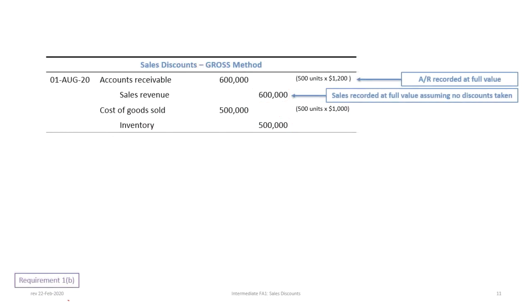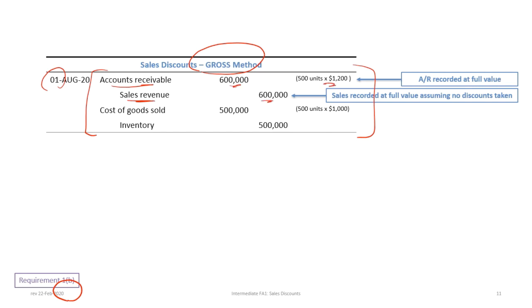We now proceed with requirement 1B — accounting for sales under the gross method. On August 1st, instead of debiting accounts receivable and crediting sales for the amount after the discount, we record sales and the receivable at the full amount of $600,000, along with the cost of goods sold and credit to inventory at cost.